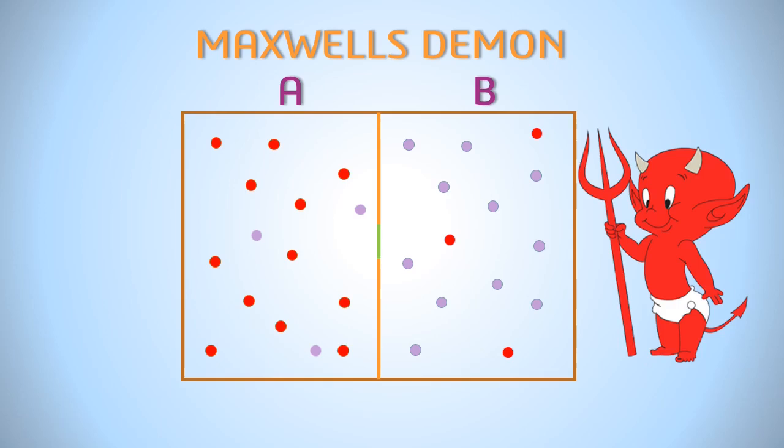The atoms in the gas are always moving randomly. The temperature is due to kinetic energy of atoms. Higher the kinetic energy, higher the temperature. However, container with high temperature gas always has some low energy atoms.